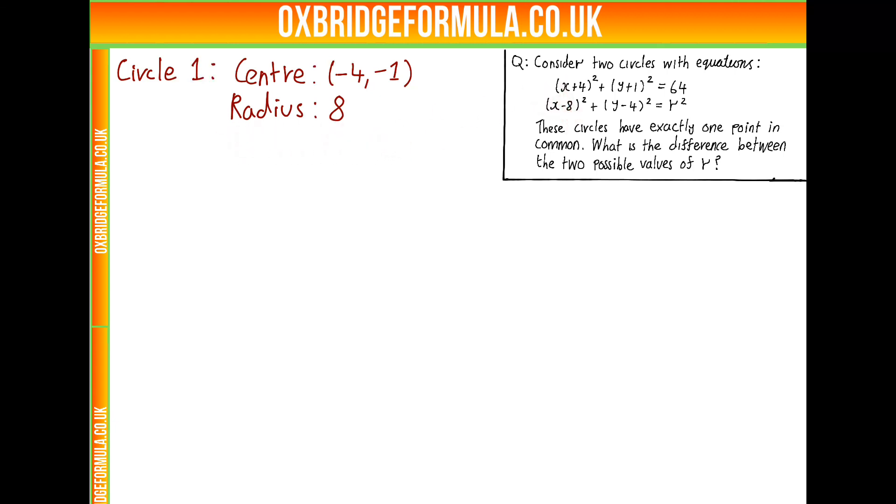Now, our second circle, we can see we've got a centre at 8, 4, because we've got x minus 8 squared plus y minus 4 squared, and our radius, we don't know, but we know it's r.